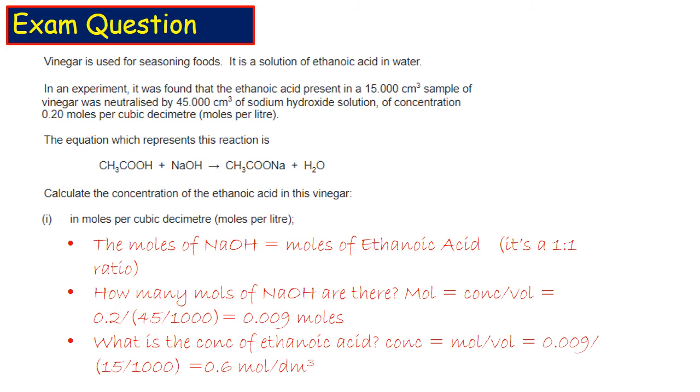We're going to rearrange the equation. So concentration equals moles divided by volume. We've got 0.009 and we can divide that by 15 divided by 1000, and that equals 0.6 mol/dm³. And that's our answer.